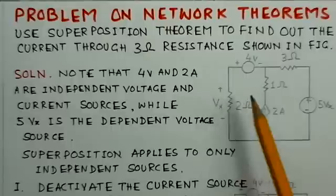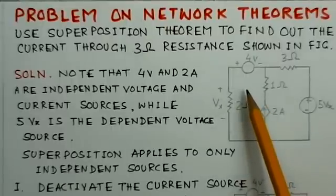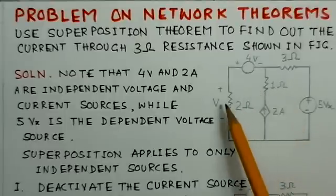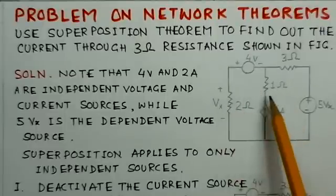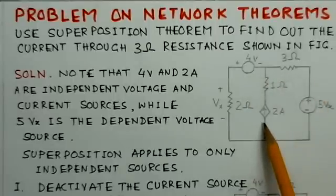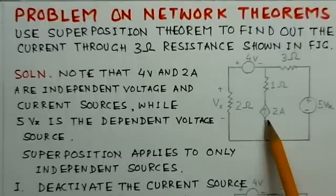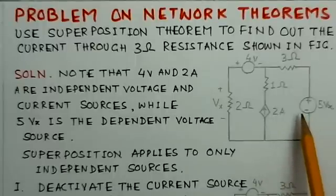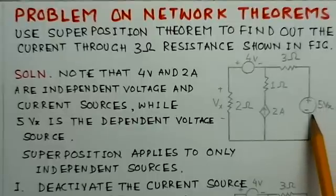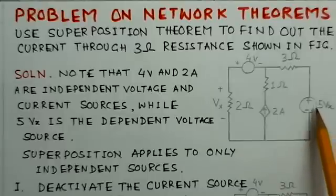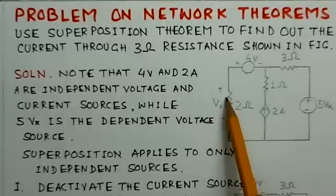This circuit diagram has two independent sources. The first one is a voltage source of 4 volts, and the second independent source is a 2 ampere current source. The dependent voltage source is 5Vx. It is dependent because the value of this voltage source depends upon the voltage across the 2 ohm resistance.